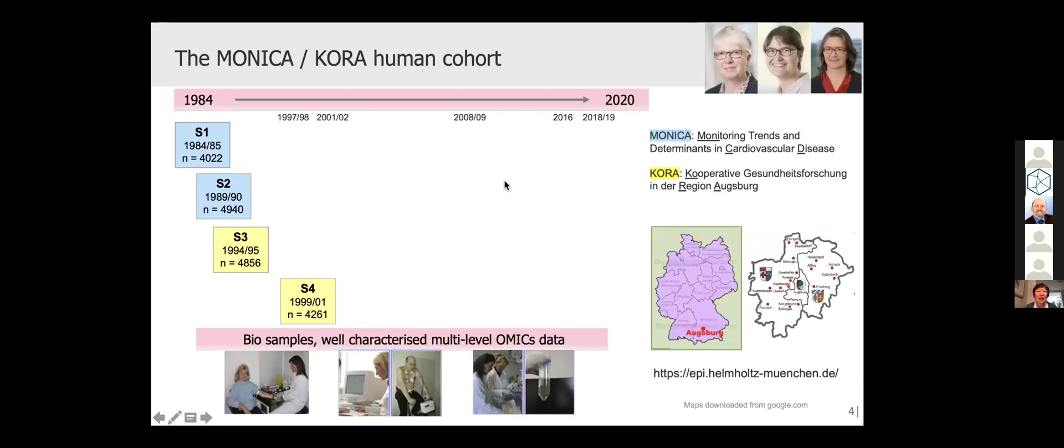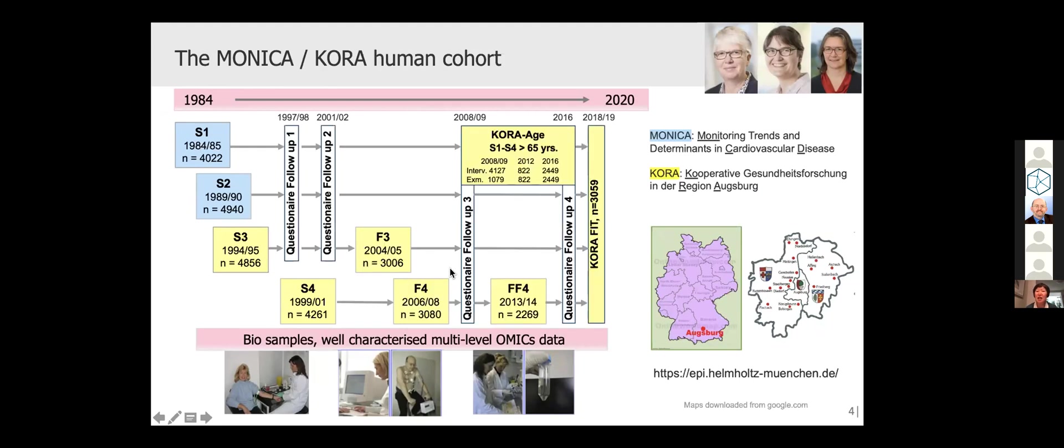Data gathering can be very time consuming. For example, in the population-based MONICA-KORA cohort, this started in 1984 with four surveys and many follow-ups. Valuable samples have been collected and well characterized for multi-level omics data, including metabolomics. Today I will mainly show you results based on survey number four and the two follow-ups of this study.